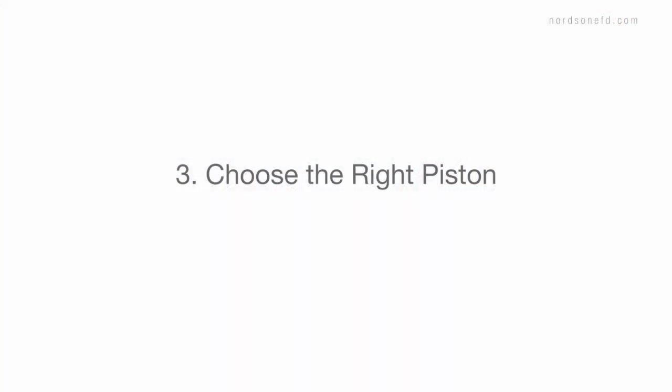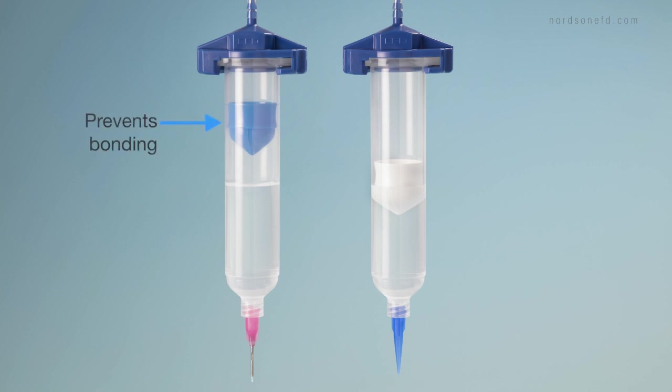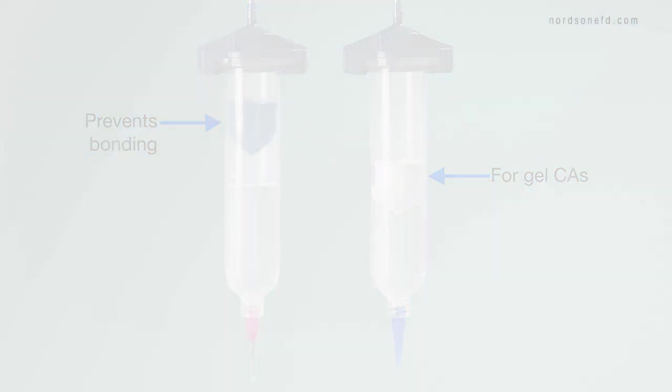Third, choose the right piston. EFD's blue LB barrier piston works best with watery CAs. It sits above the fluid in the syringe barrel to prevent the piston from bonding to the syringe. EFD's general purpose white piston works best with gel CAs that require higher dispense pressures.